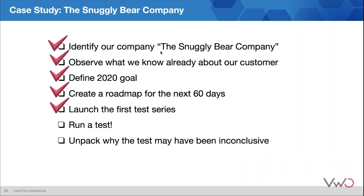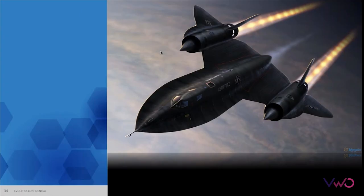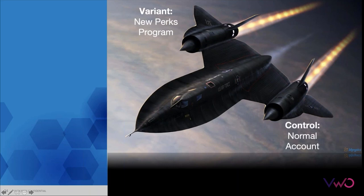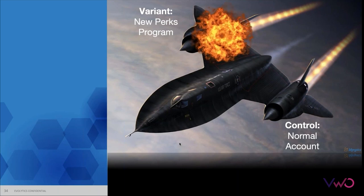Current account users will be measured on upgrade rate, with secondary KPIs like site conversion, average order value, revenue, and time spent on site. For new users, they'll be tracked on sign-up click-through rate, site conversion, AOV, revenue, time spent, etc. Now that we have the first test series together, let's look at our first test. The test is in flight — we have our variant new perks program engine running, our control group running, and we are excited. However, we're nearing completion and notice conversions are drastically different from the control in a negative way — even worse than before.